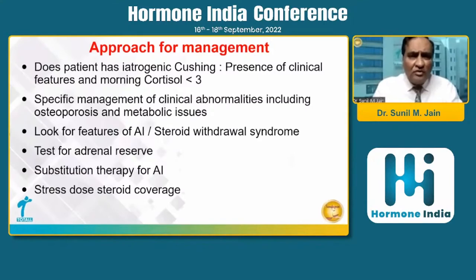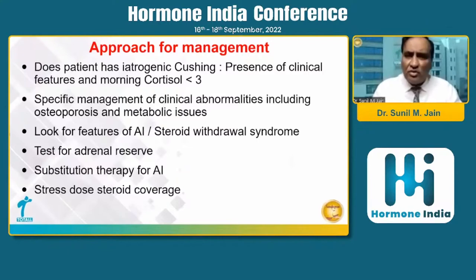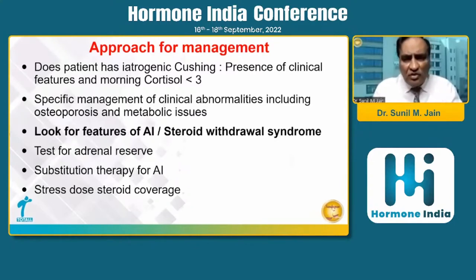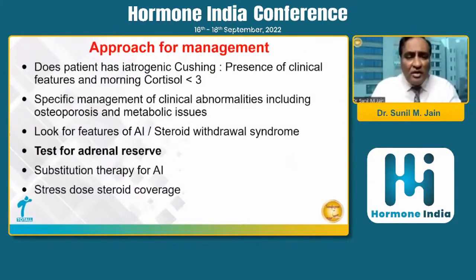As far as the approach is concerned, first inquire whether the patient has iatrogenic Cushing's — history is very important. If you measure cortisol and it is less than 3 µg/dL in the morning, the patient is most likely having exogenous Cushing's. We must then manage the specific clinical abnormalities present. We also have to look for features of steroid withdrawal syndrome, because many times patients stop these medications and come to us with anorexia, nausea, vomiting, and myalgia — a shot of steroid will make them fully recover.